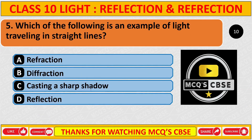Which of the following is an example of light travelling in a straight line? The correct answer is C: casting a sharp shadow.